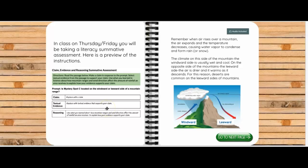The passage is going to describe an area and you're going to make a claim about whether or not that area is located on a windward side of a mountain or a leeward side of the mountain. You're going to provide textual evidence that supports your claim, and then you're going to use reasoning. You're going to use what you learned about windward and leeward sides of mountains to explain how the evidence you picked supports the claim that you make.